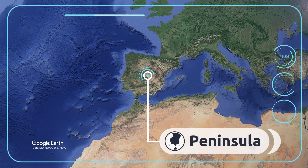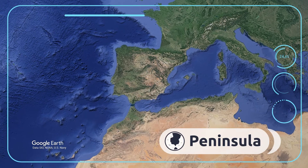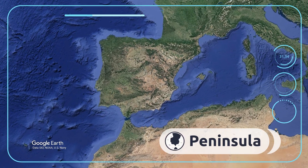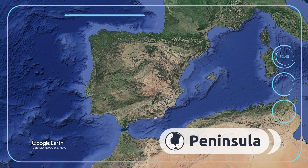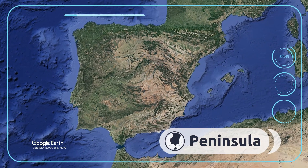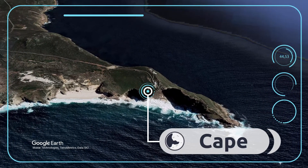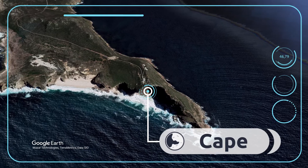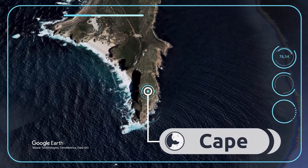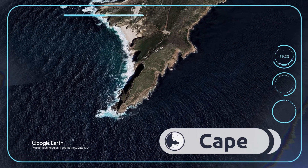A peninsula is a portion of land surrounded by water on three sides. Can you name a peninsula? That's it — the Iberian Peninsula! A cape is a narrow part of land that extends into the water, usually the sea. The Cape of Good Hope is one of the most famous capes in the world.